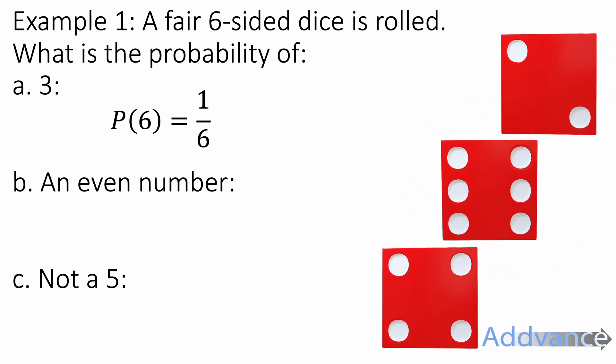Now what's the probability of getting an even number? Well, three even numbers out of 6, so the probability is 3 out of 6. We can simplify that fraction though, and we always simplify fractions in maths, to be 1 half.